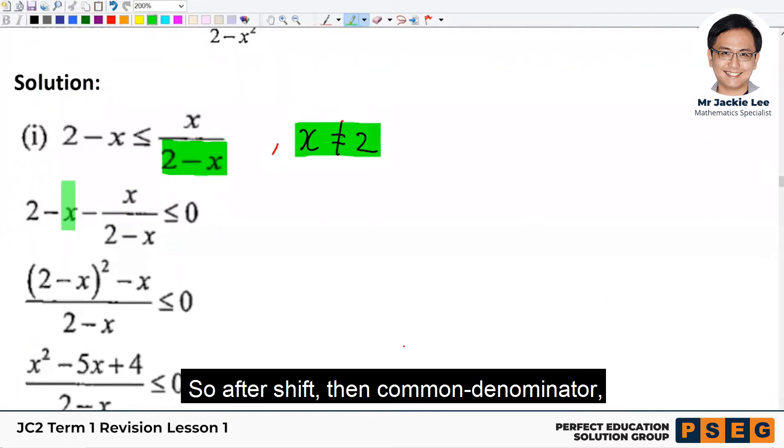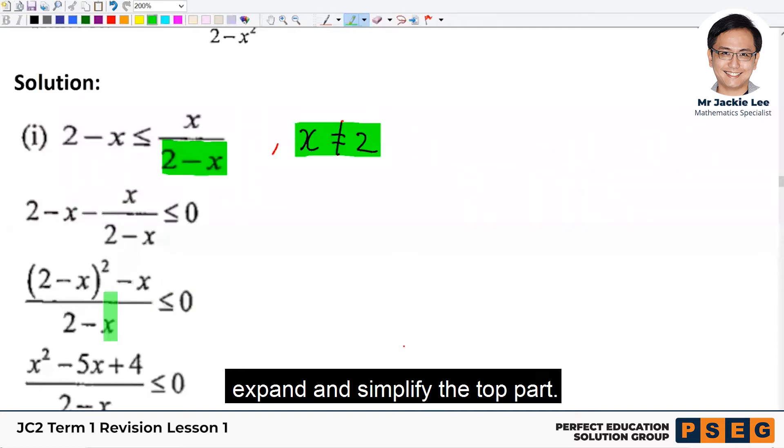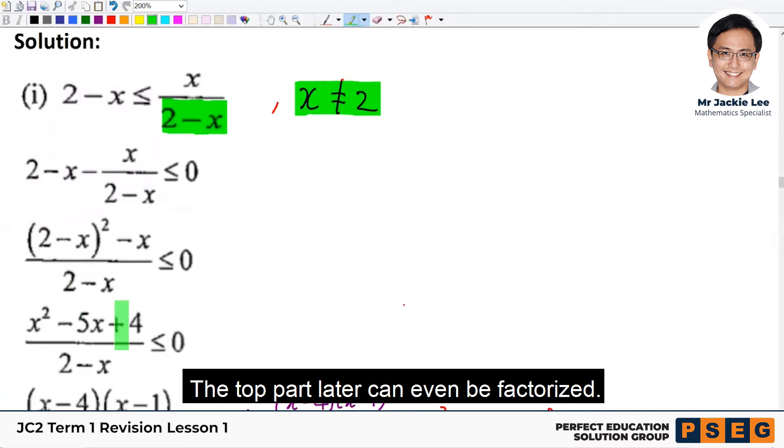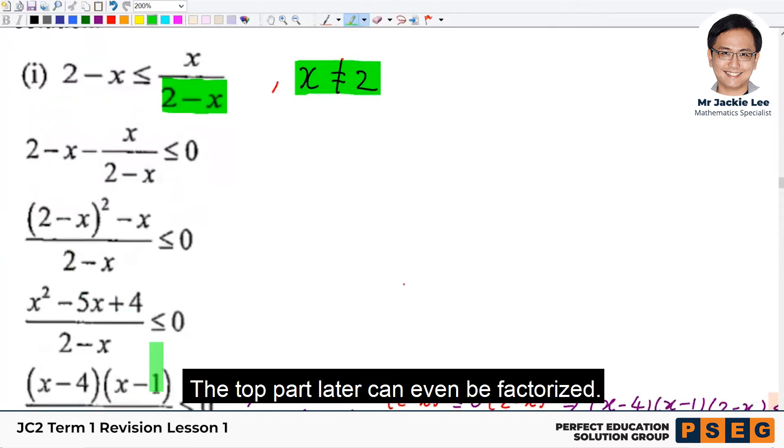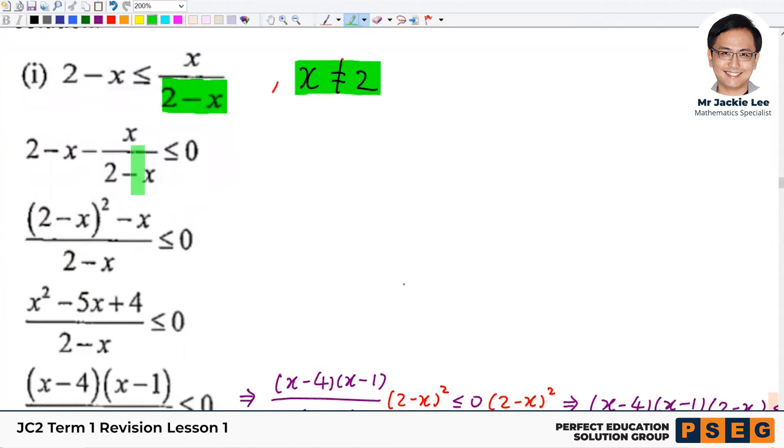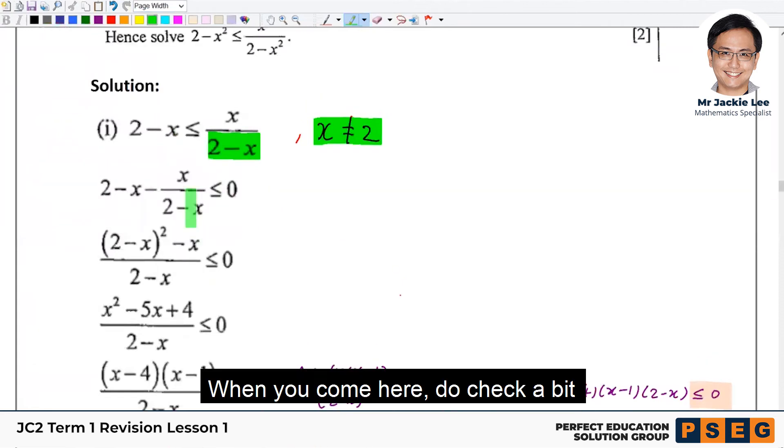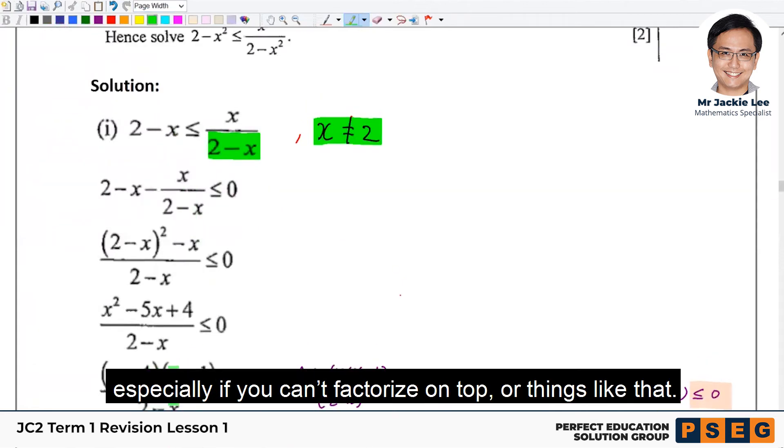So after shift, then common denominator. Expand and simplify the top part. The top part later can even factorize actually. So when it comes to here, do check a bit. Especially if you can factorize on top or things like that.